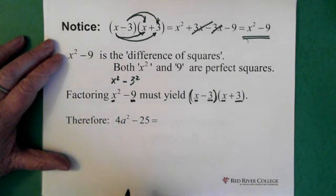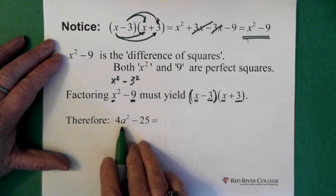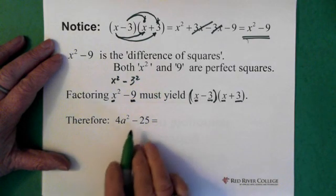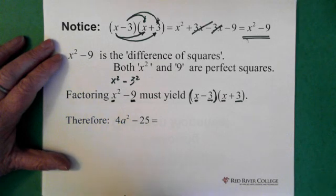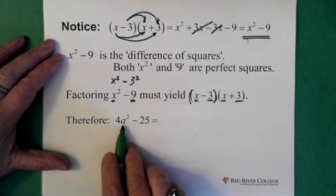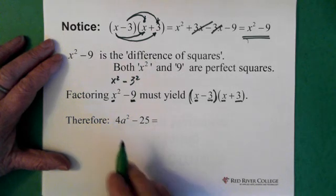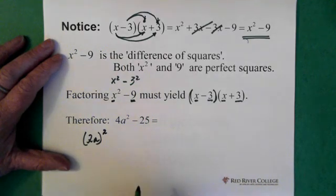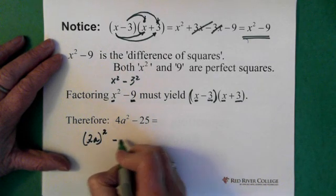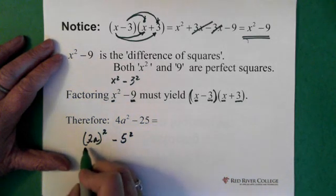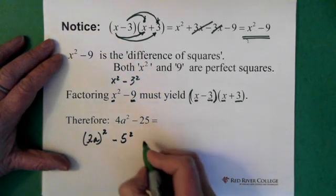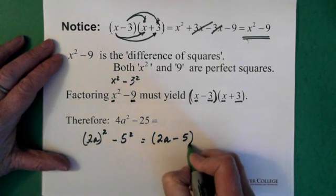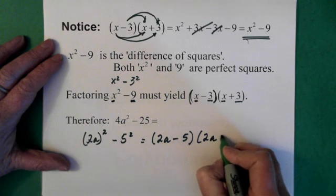So if you look at this equation: 4a squared minus 25. The first thing we ask ourselves is, is that a difference of squares? Especially when we see a negative — two terms and a negative. When we look at it, we see that 4a squared is a 2a squared. And 25 is 5 squared. So we're subtracting 5 squared. These numbers are what go into the brackets, so we end up with 2a minus 5 times 2a plus 5.